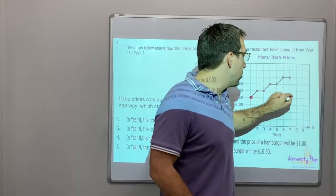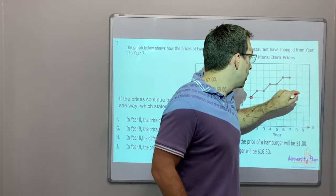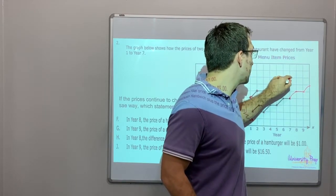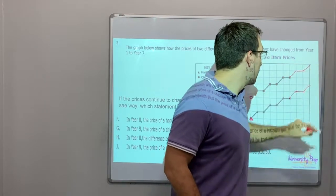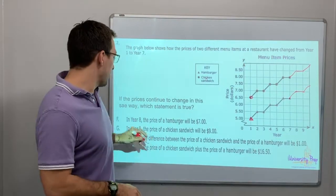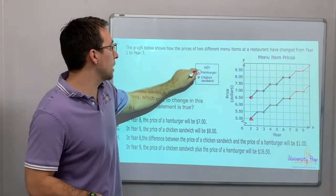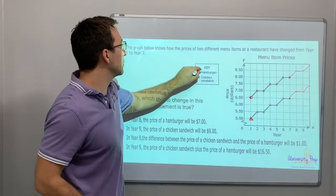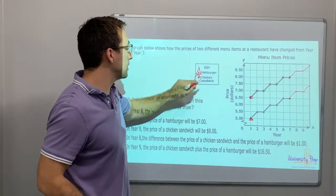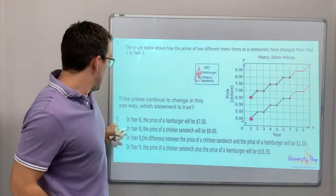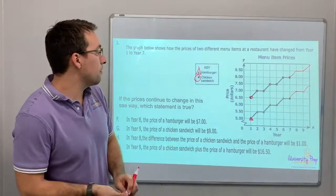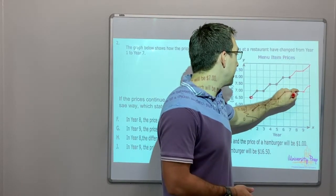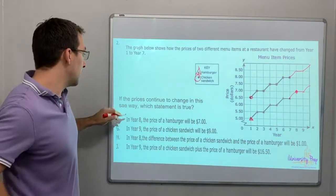So it would do that, right? Theoretically. Let's look. Hamburger is the triangle, chicken is the sandwich. In year eight, the price of the hamburger will be seven dollars. Year seven, year eight, ah, that is correct.